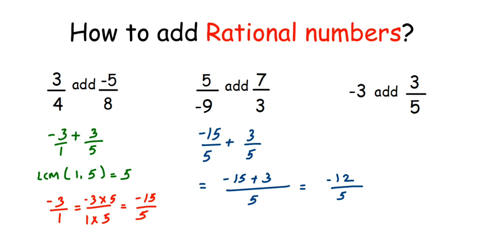I hope these questions are clear — how to add rational numbers when the denominators are not same. You just do one extra step: take the LCM and make the denominators equal to the LCM. I hope it is clear. In case you have any questions or doubts, you can drop a comment and I will try to answer them. Thank you so much for watching.